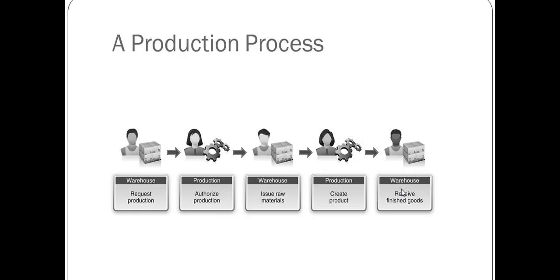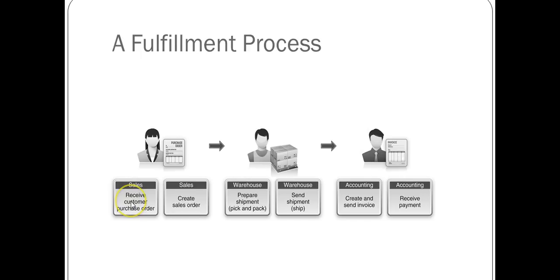The fulfillment process is triggered by receiving a customer's purchase order, which is converted to a sales order. Referencing that sales order, your warehouse prepares the shipment — doing the picking and packing — and sends out the shipment. Once the customer receives the goods, they are sent an invoice for billing, and the fulfillment process concludes with receiving the payment from the customer.